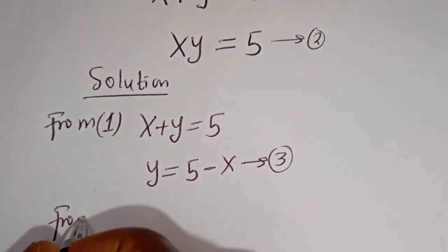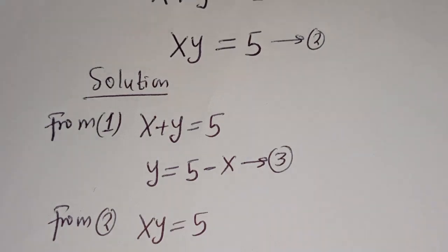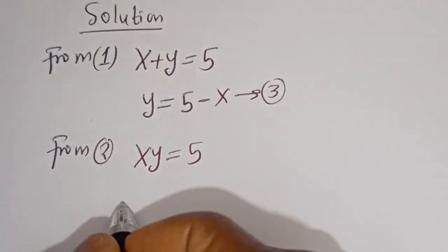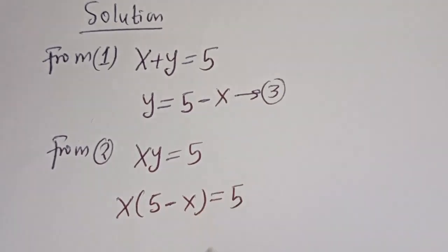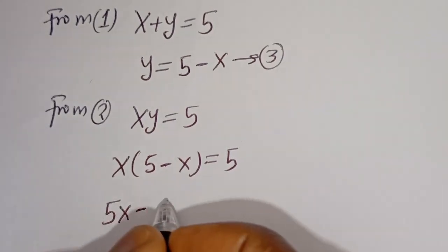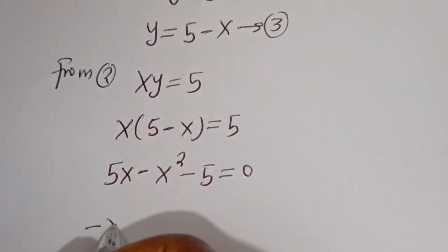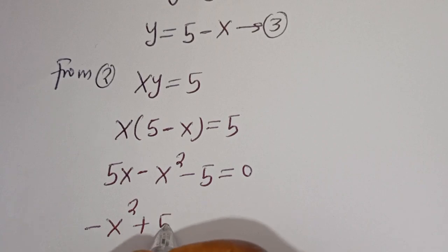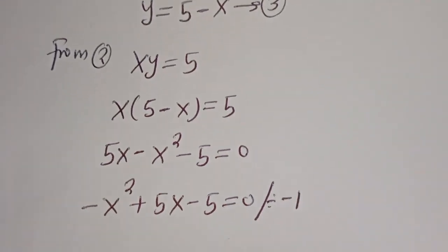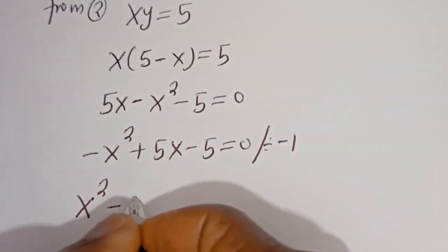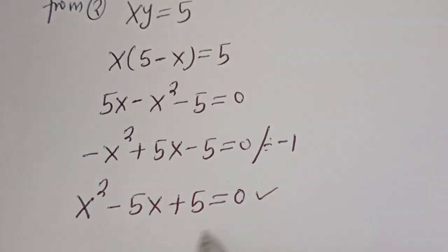From equation 2, xy is equal to 5. Let's substitute for y. We have x times (5 minus x) is equal to 5. Expanding: 5x minus x squared minus 5 equals 0, or minus x squared plus 5x minus 5 equals 0. Dividing all through by minus 1 gives x squared minus 5x plus 5 equals 0, which is a quadratic equation.